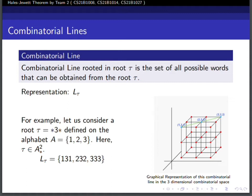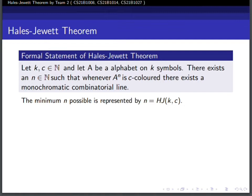The Hales-Jewett theorem states that for given positive integers k and c, there exists a positive integer n such that for every c-coloring of an n-dimensional hypercube of side length k, there exists a monochromatic combinatorial line. The minimum possible n is represented by HJ(k,c).